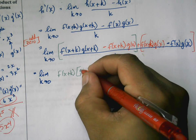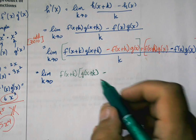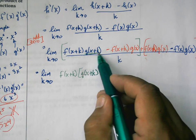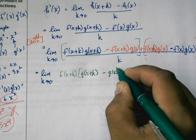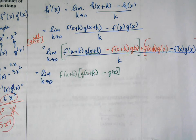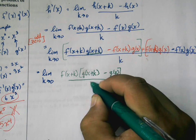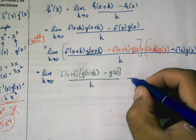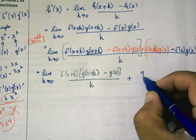And what I have left is g of x plus k. My pen's running out of ink here. So I have g of x plus k here minus g of x, all of this over k.